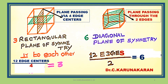The diagonal plane of symmetry passes through two edges — the edges of the cube. There are six diagonal planes of symmetry present in cubic crystals.